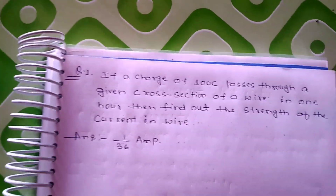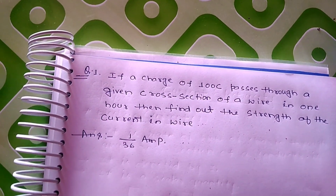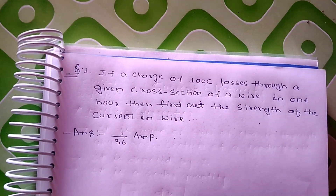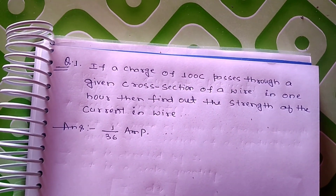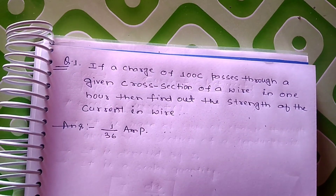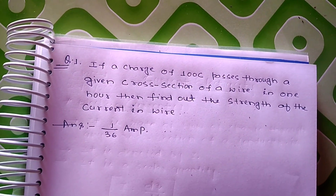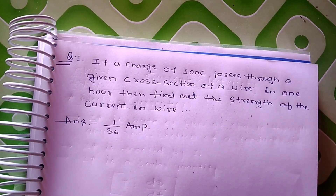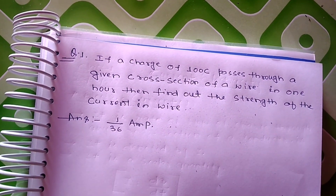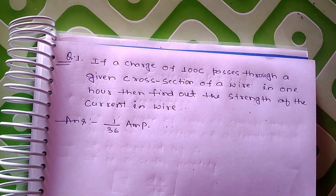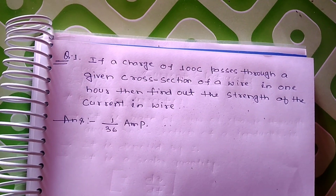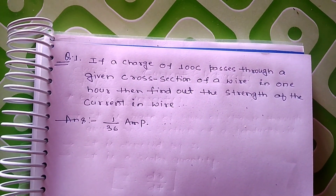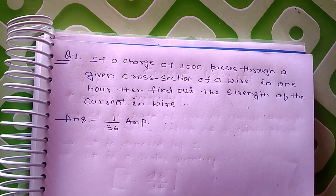अब दूसरा question: if a charge of 100 coulombs passes through a given cross section of a wire in one hour, then find out the strength of the current in the wire. Charge दिया है 100 coulomb, time दिया है one hour। Answer है 1.36 ampere — आप इसे solve करें और comment में answer डालें। Thank you, कल फिर मिलेंगे नए topic के साथ — that is drift velocity, mobility and relation between them. Thank you.